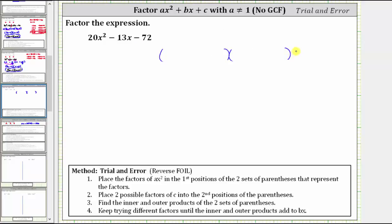The first step is to place the factors of ax² in the first positions of the two binomial factors. Because ax² is 20x², we need to consider the factors of 4x and 5x, 2x and 10x, as well as x and 20x.